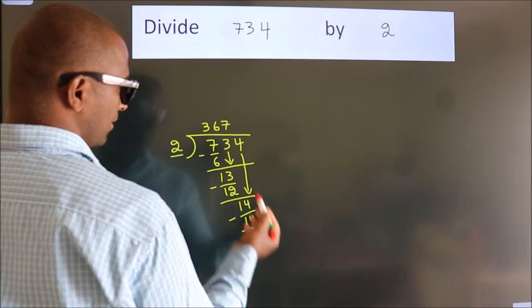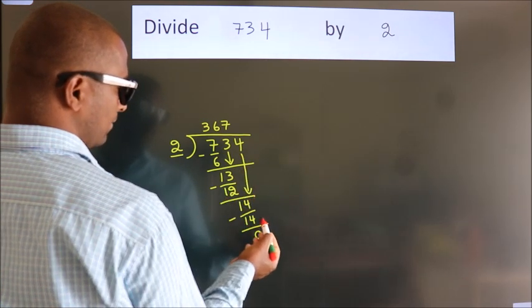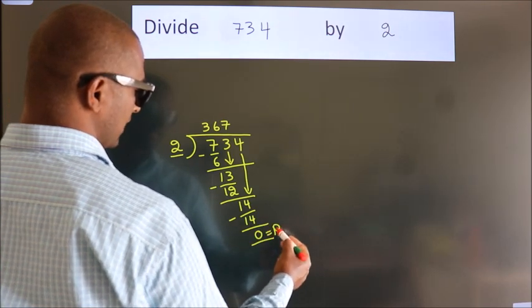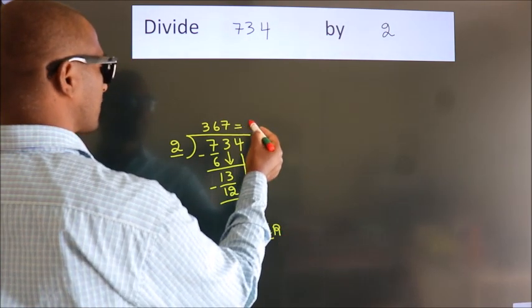After this, no more numbers to bring down. So, we stop here. This is our remainder. This is our quotient.